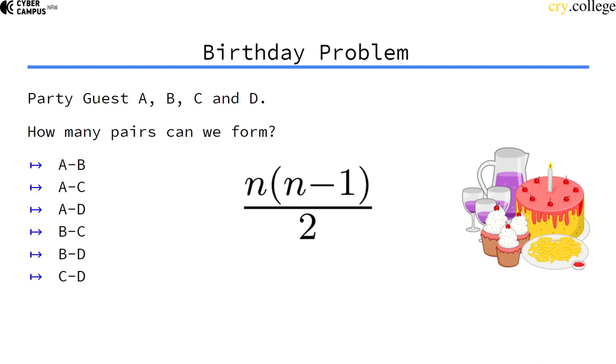Does A have the same birthday as D? Does A have the same birthday as C? Does B have the same birthday as C? Does B have the same birthday as D? Does C have the same birthday as D? Now we have checked all pairs, all possible combinations of birthdays.